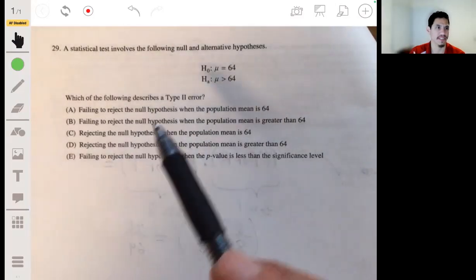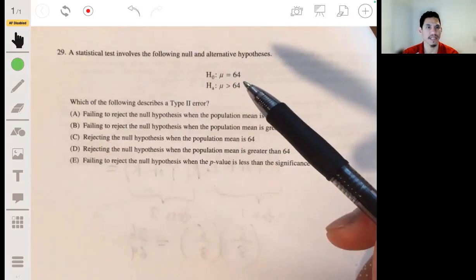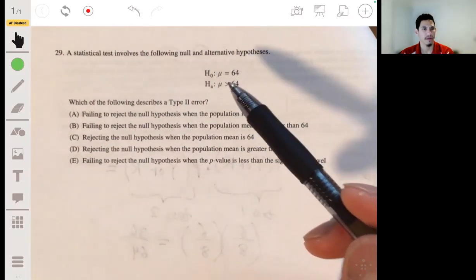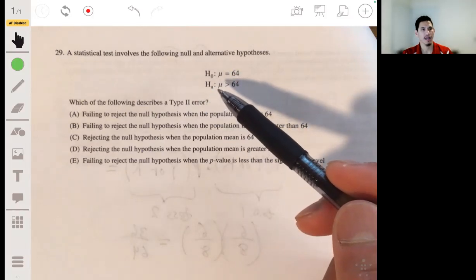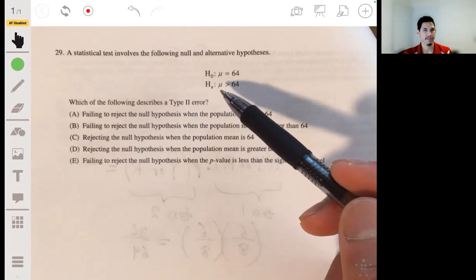Alright, problem 29. We have a statistical test that involves the following null and alternative hypotheses. We have that H0 is that mu equals 64 and that HA, the alternative hypothesis, is that mu is greater than 64.